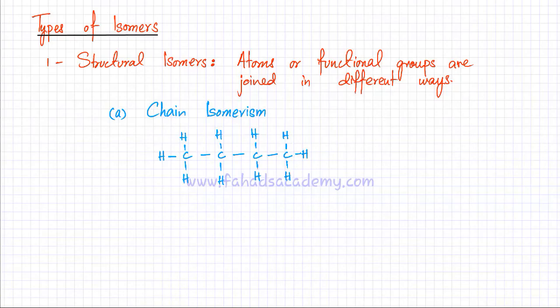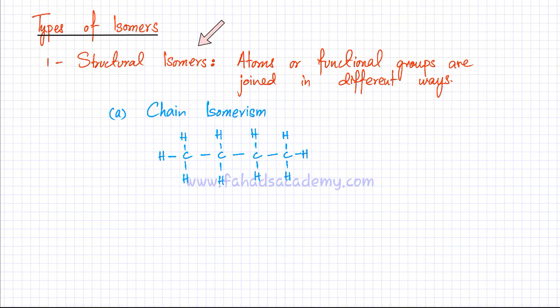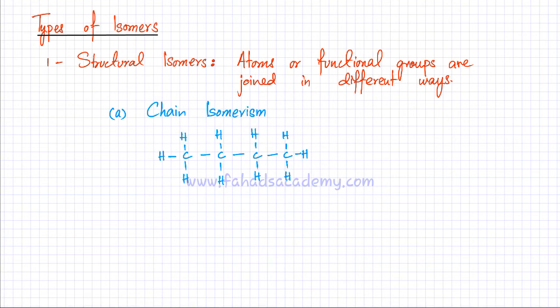Now we're going to discuss different types of isomers. The first type is called structural isomers, and there are different types of structural isomers as well. When you deal with structural isomers, the atoms or functional groups are joined in different ways — the arrangement around the carbon chain is going to be different.